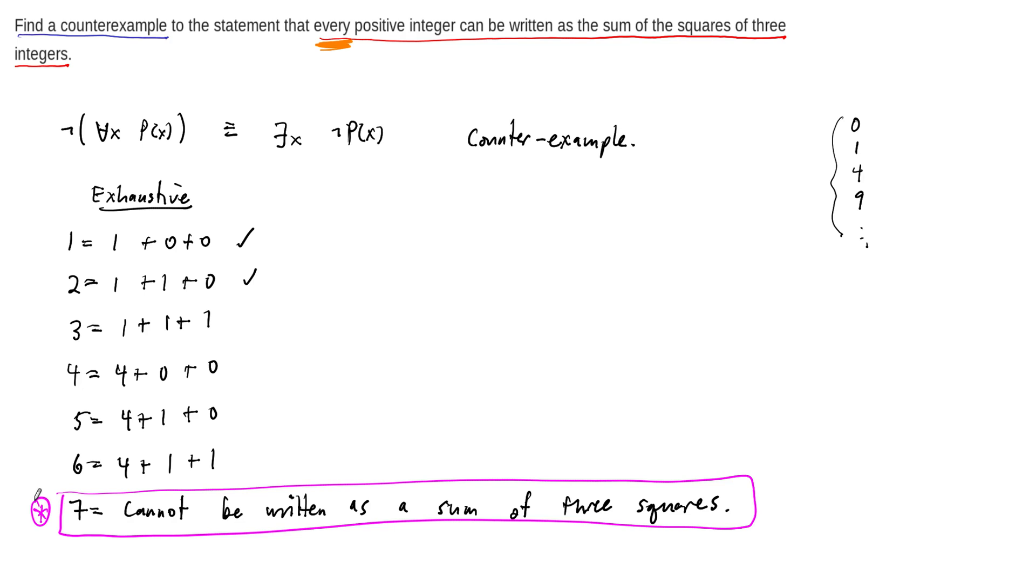Now, sometimes the exhaustive method is truly exhausting. This one didn't take us too much work, right? I didn't put my check marks here, but this one didn't take us all that much work, and it wasn't that hard to think through, but sometimes the exhaustive method would truly be exhausting, like I said, where you would either then want a computer or you would want to try to think of your counterexample another way, but this right here proves that not every integer can be written as a sum of three squares.